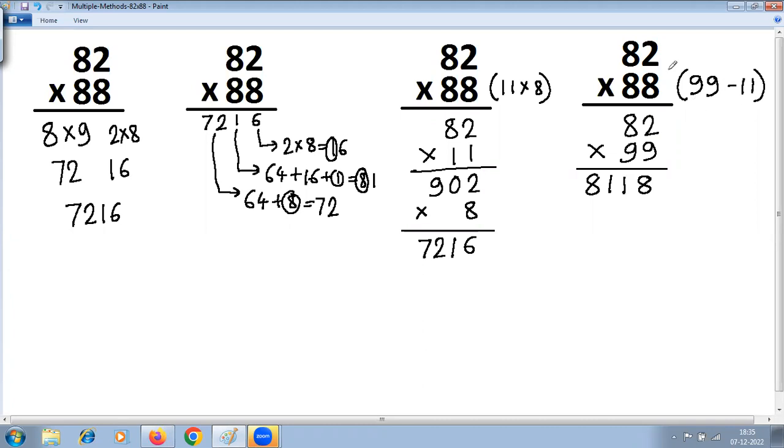Now you have to subtract 82 into 11, so we'll do that separately. 82 into 11: 2, 8 plus 2 is 10, so 0 carry 1, 8 plus 1 is 9.